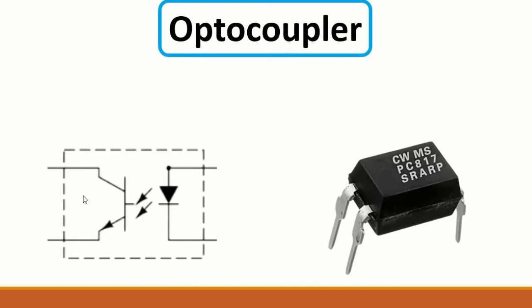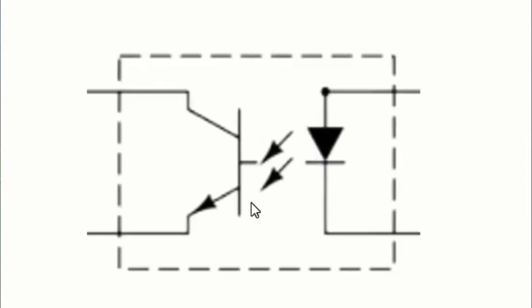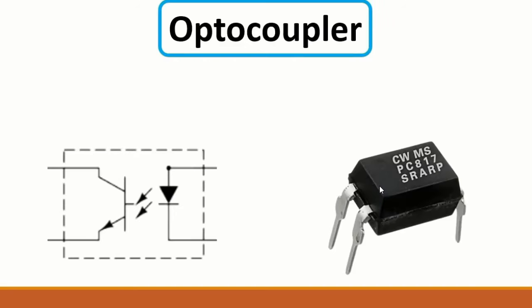Then we have the optocoupler - this is an IC. The symbol shows a photodiode - with two arrows from the diode - and a phototransistor. The optocoupler has four terminals. There is a video in the channel on how to test the optocoupler.